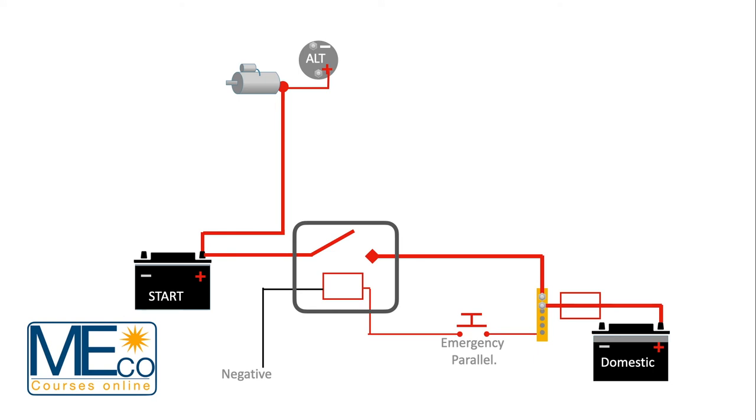If the start battery should fail to start the engine, just push the emergency parallel button once and it will hold the batteries parallel once you start the engine. Now you can start the engine using both batteries. Once the engine is running, both the start and domestics will be on charge.